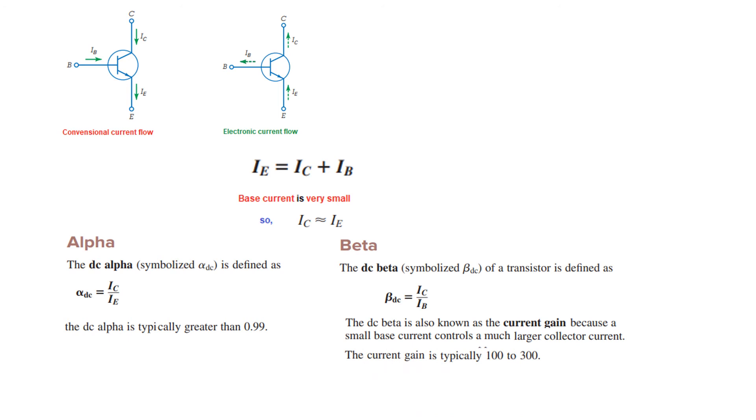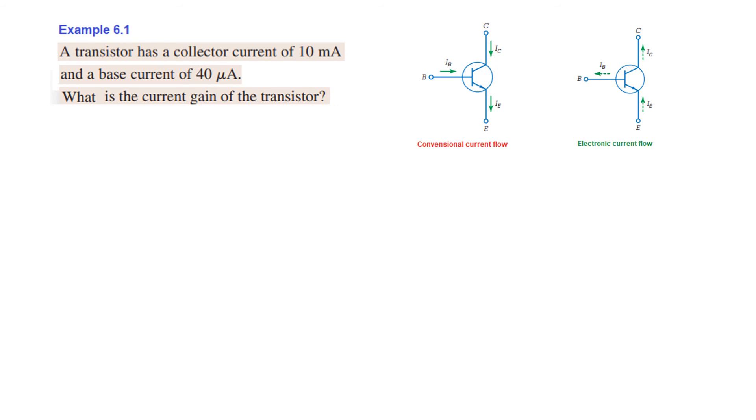And its value is generally for the small signal transistors, it ranges from 100 to 300. Okay, now let's solve few short examples or discuss few short examples solved in the book.